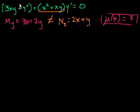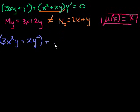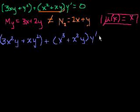Let's solve the problem. Let's multiply both sides of this equation by mu, which is x. So we get, if you multiply each term by x: 3x²y + xy² + x³ + x²y, times y prime, is equal to 0. Now, just as a reality check, let's make sure that this is now an exact equation.